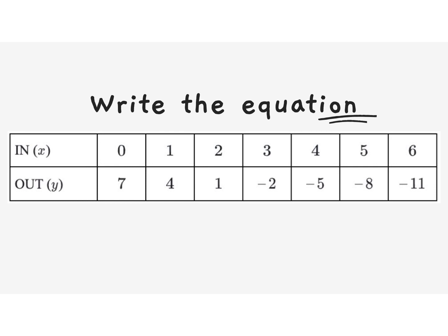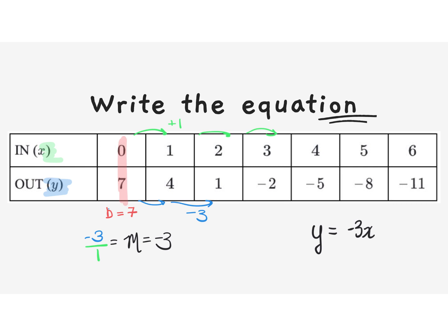Let's do it again. Our b value is 7, so b equals 7. Our slope m: the change in x all the way through the table is plus 1, and the change in y is minus 3. So that simplifies to m equals negative 3. Our equation is y equals negative 3x plus 7.